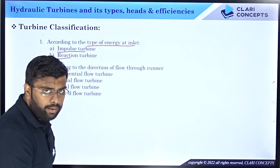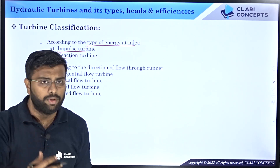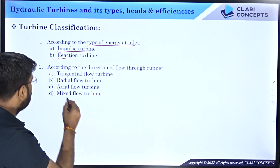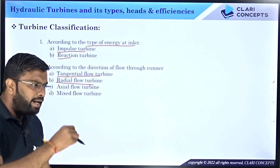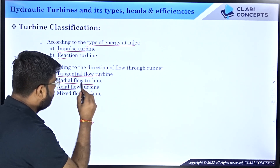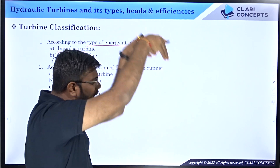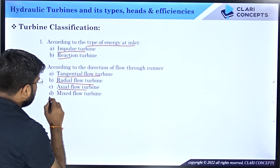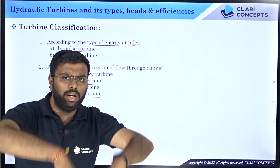Second classification is according to the direction of flow through the runner. Pelton has a tangential flow — the direction of the water jet is tangential to the runner circle, so it is a tangential flow turbine. Francis is a radial flow turbine — flow through the runner is radial. Kaplan is an axial flow turbine — the axis is vertical and the flow is also vertical along the axis. There is also a mixed flow category, where advanced Francis turbines have radial entry and axial exit.